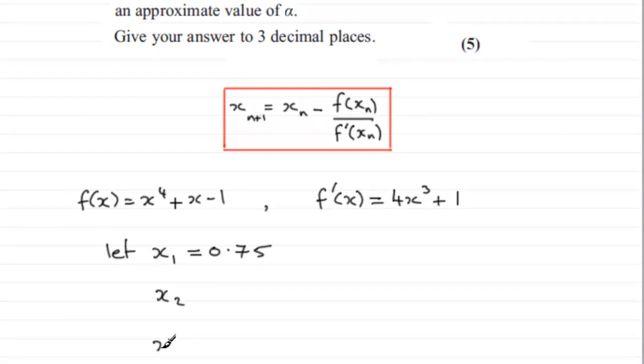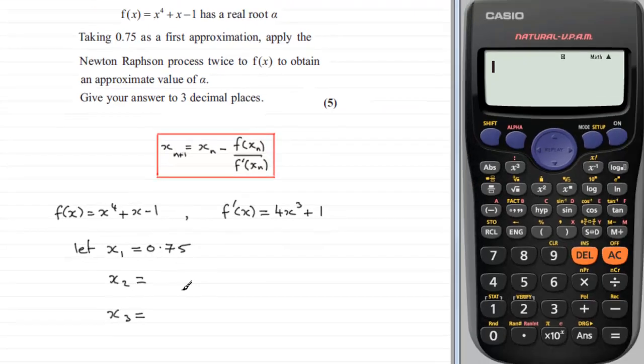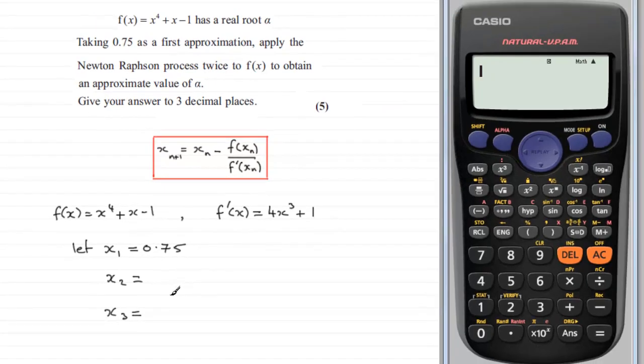to work out what the other two approximations are going to be, x2 and x3. And there's a quick way that we can do this. You should have seen it before in using iteration.